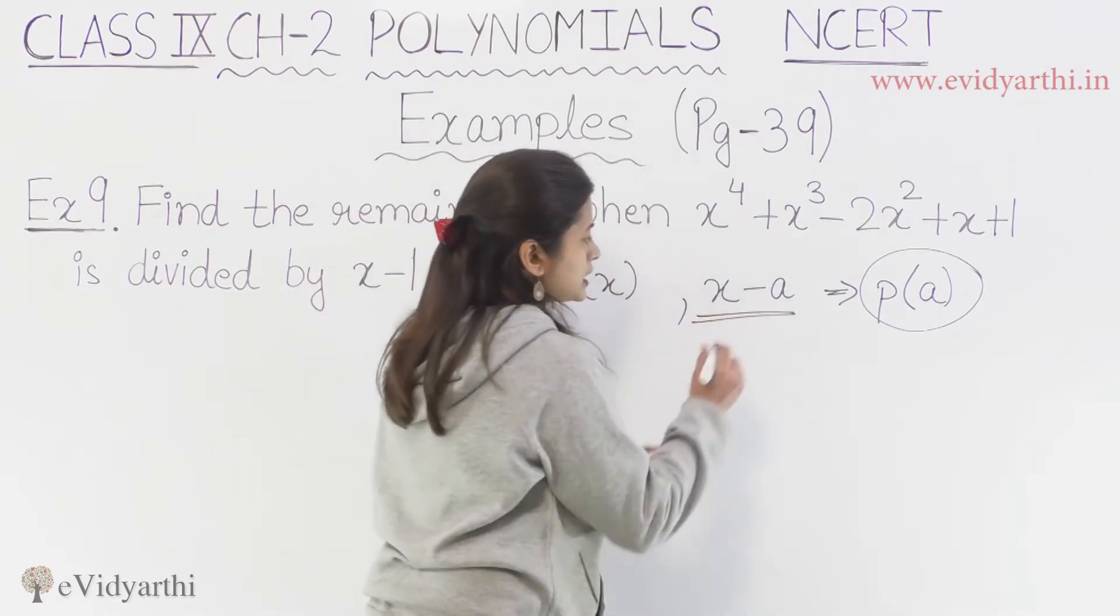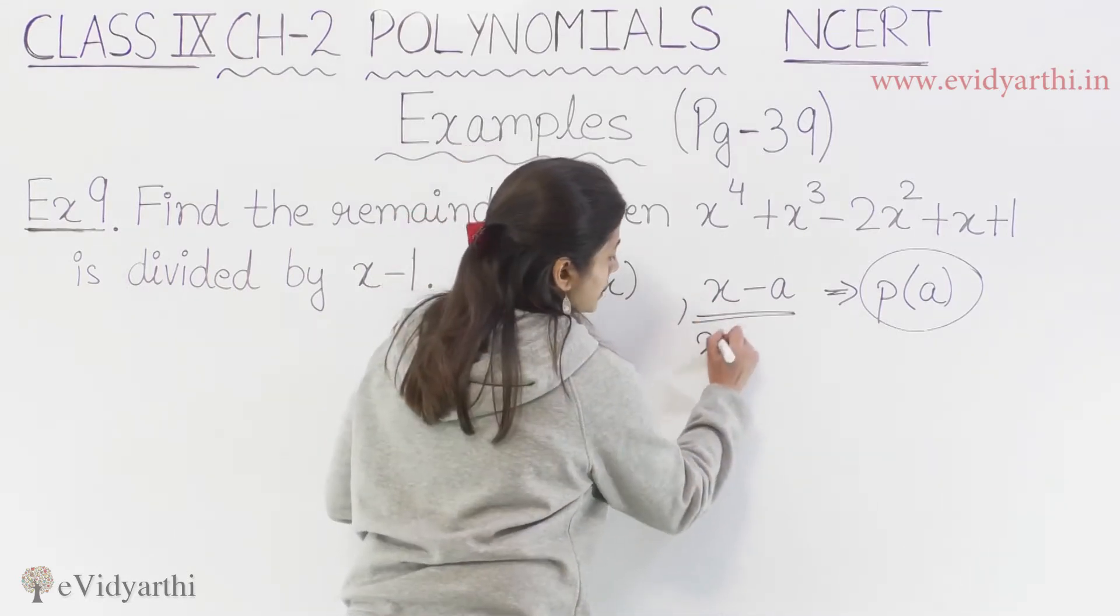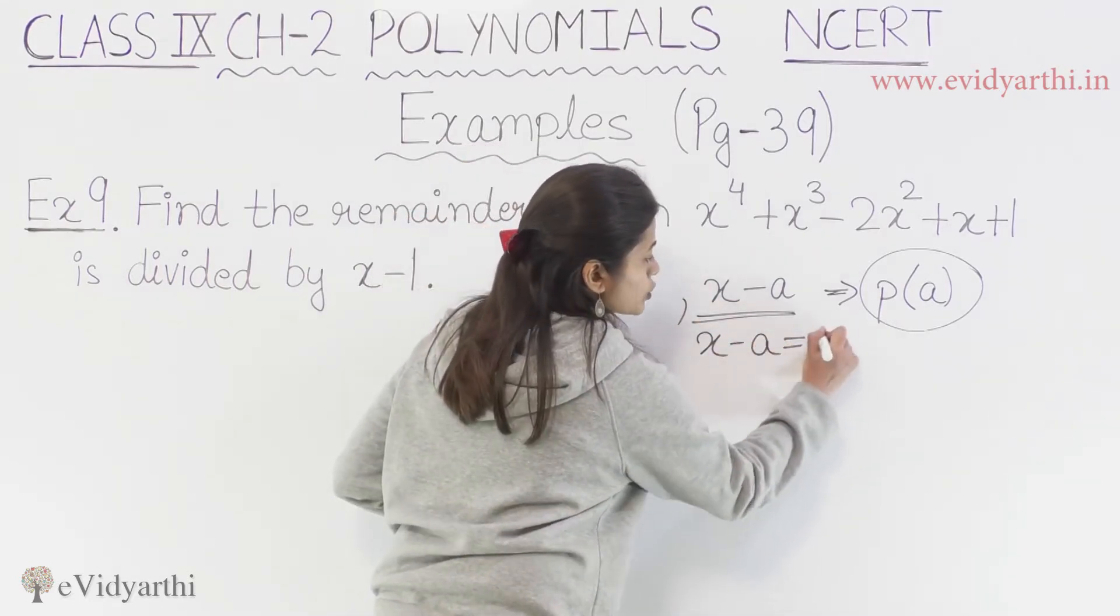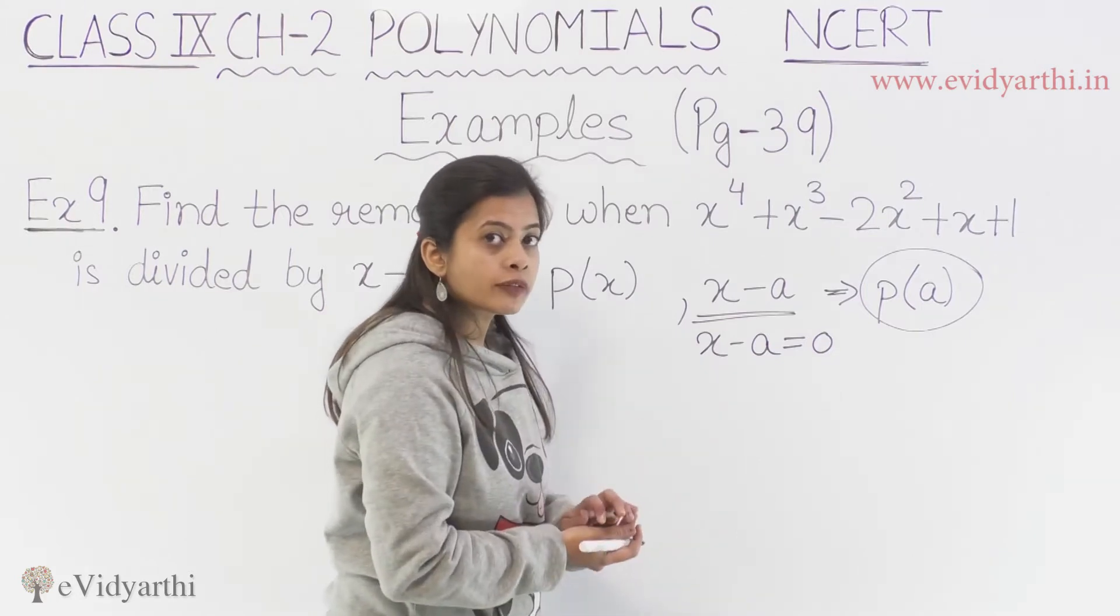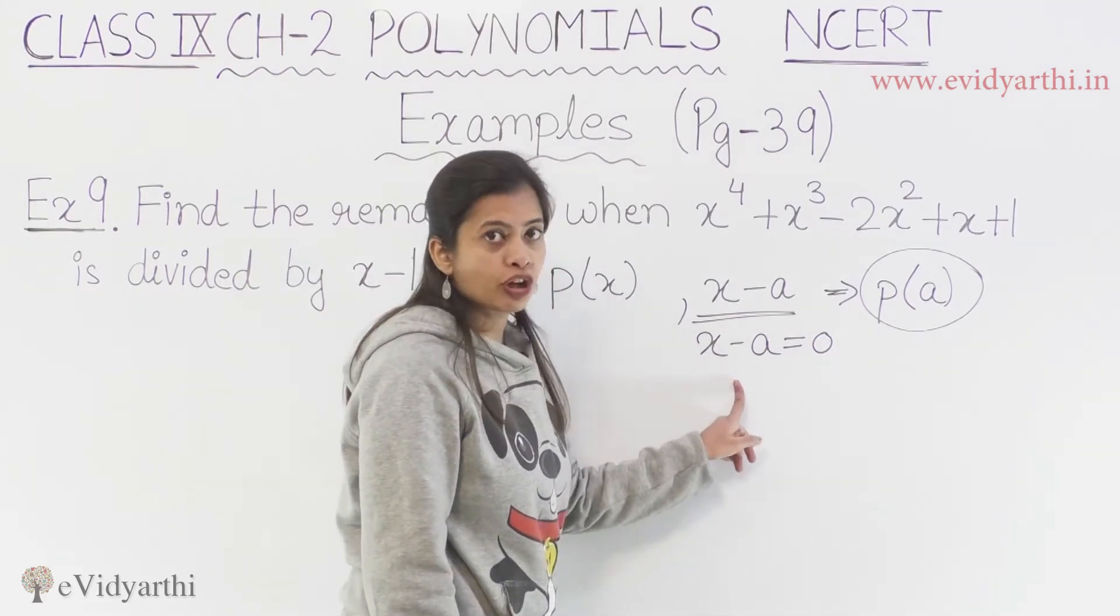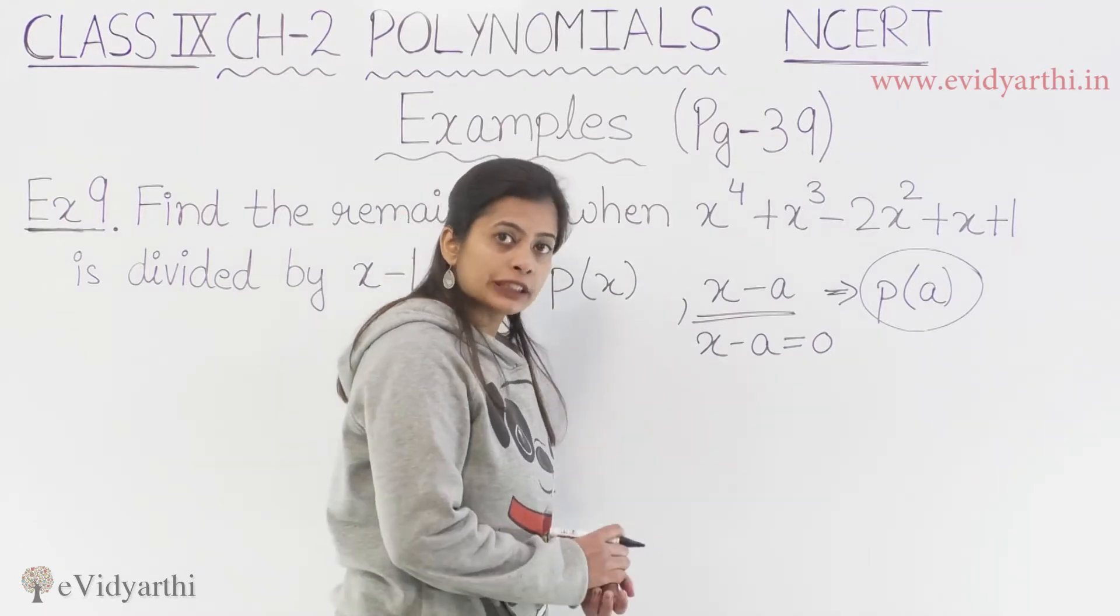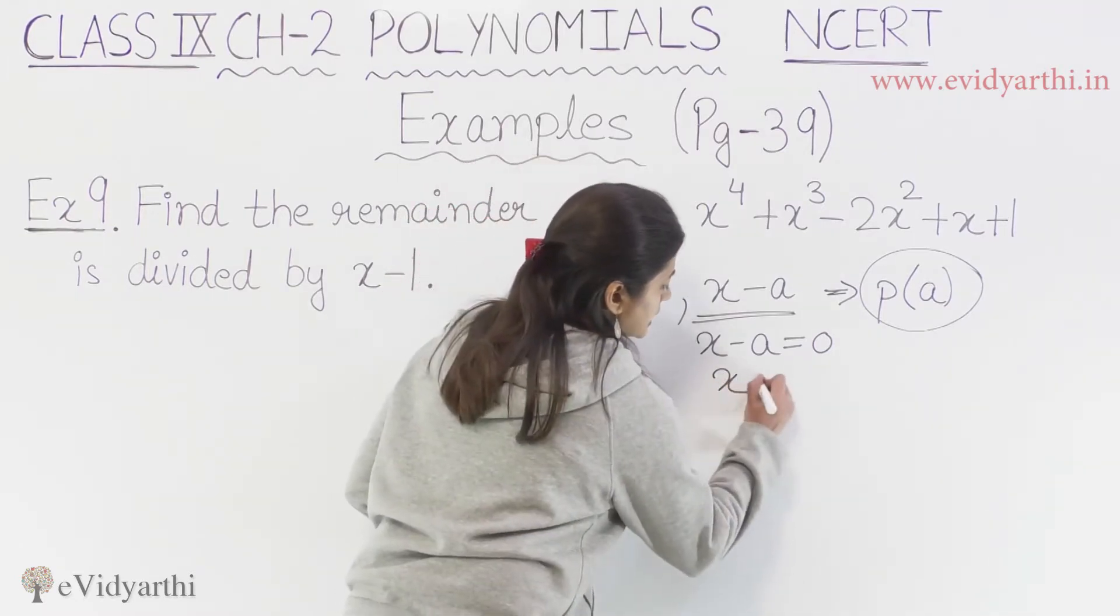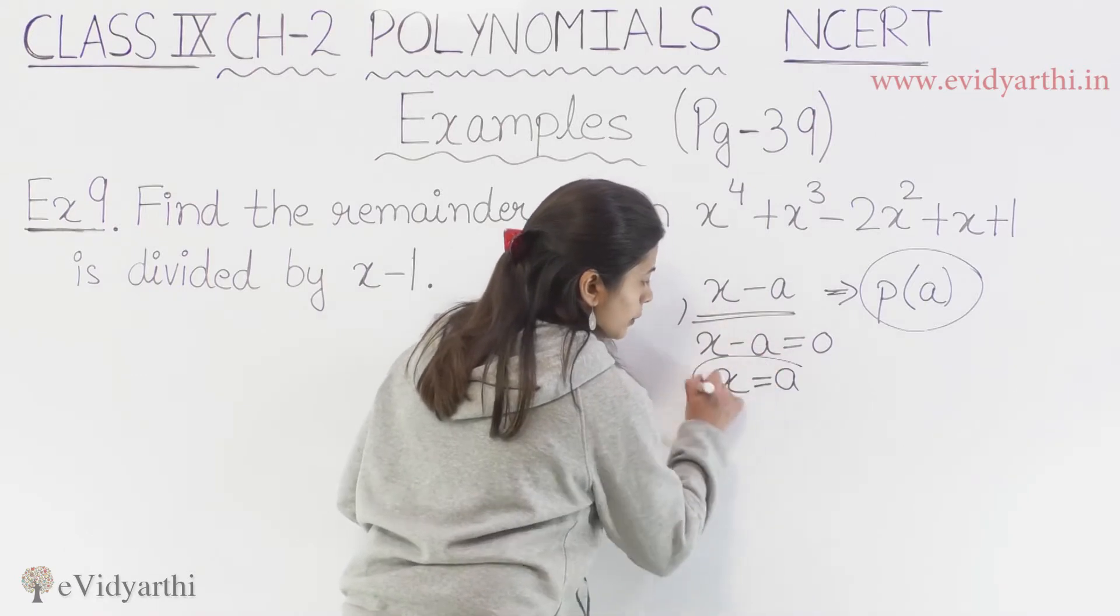Ki is wale term se apne x ki value nikalni hai. Agar hum x minus a equals to zero rakhte hai, that means we are going to find the zero of the polynomial. So x kitna ho jayega hamara? A ke equal ho jayega.